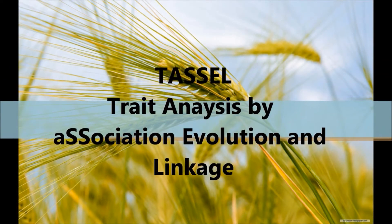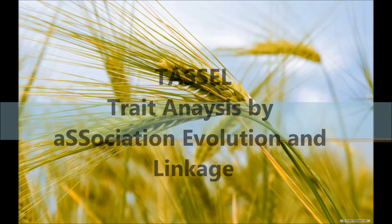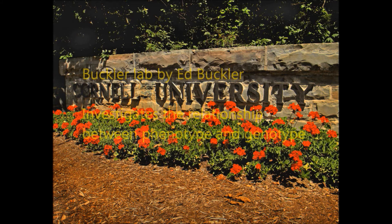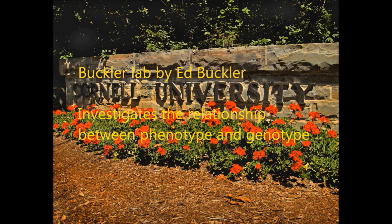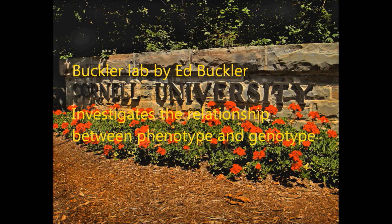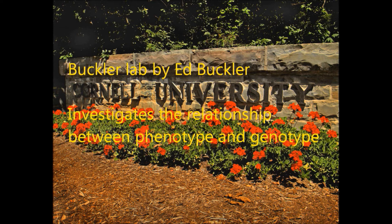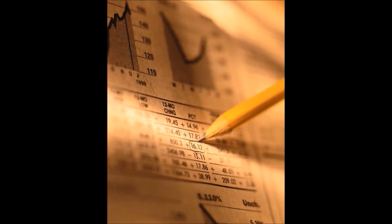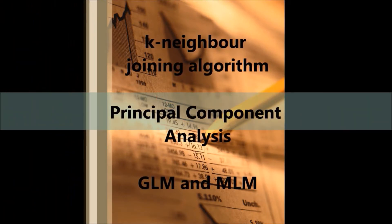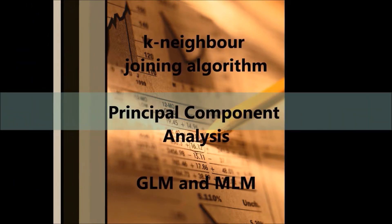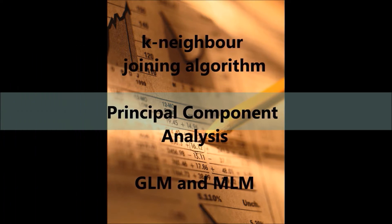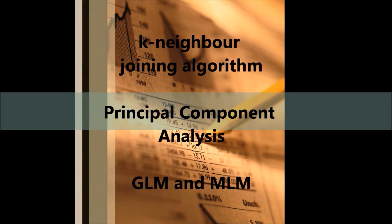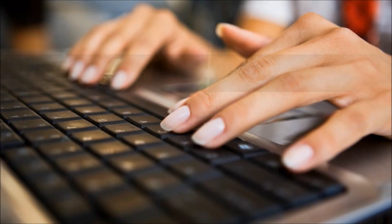TASEL is made by trait analysis by association, evolution, and linkage. It was first developed at Buckler Lab by Ed Buckler in Cornell University. It mainly investigates the relationship between phenotype and genotype. It involves the K-Namer joining algorithm, principal component analysis, GLM and MLM. GLM and MLM are useful for associating phenotype and genotype.